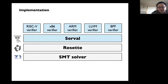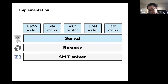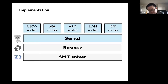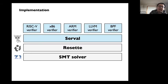Given all this, you can build many more verifiers. We actually built a bunch ourselves: RISC-V 32 and 64-bit verifiers, ARM 32 and 64-bit, one for LLVM IR, and one for the Berkeley Packet Filter eBPF — all on top of Serval. Feel free to check them out on GitHub.